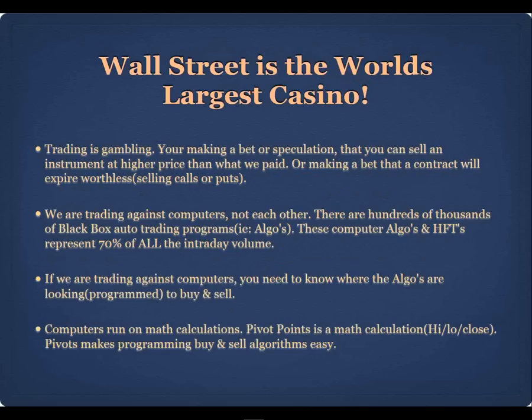If we're trading against computers, we need to know where the algos are programmed to buy and sell. Computers run on math calculations. Pivot points are a math calculation based on the previous period's high, low, and close. That makes programming buy and sell algorithms very easy for programmers. So pivot points are naturally where the algos are set to act.